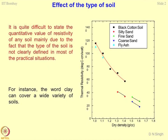Looking at the trends, the finest grain material — black cotton soil — shows maximum resistivity, followed by fly ash, which is a silty material. Clays and silts mostly show very high resistivity. Followed by sands — coarse sands and fine sands. This illustrates the influence of size fraction on thermal resistivity.